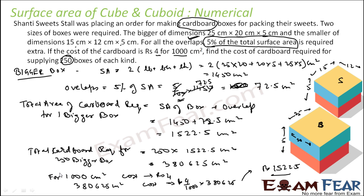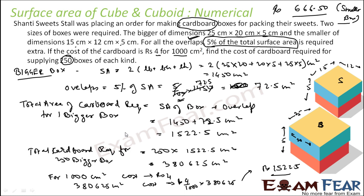The same exercise has to be repeated for the smaller box. You will get the answer as rupees 661.50 paise for the smaller box. You have to first find the surface area, then find the overlap, then get the total cardboard area for one box, multiply by 250, and then find the cost — since the cost per 1000 cm² is rupees 4.